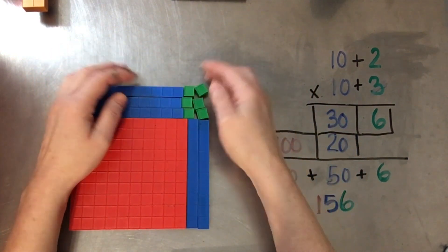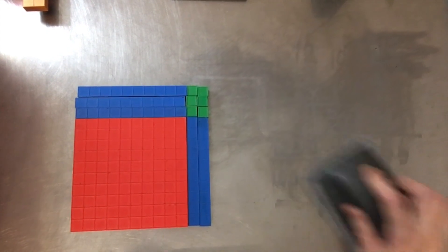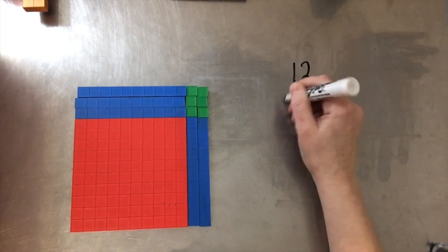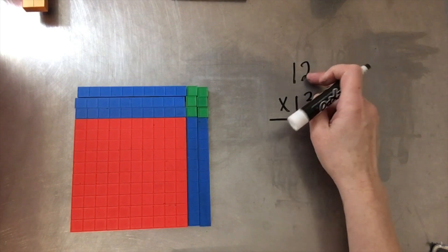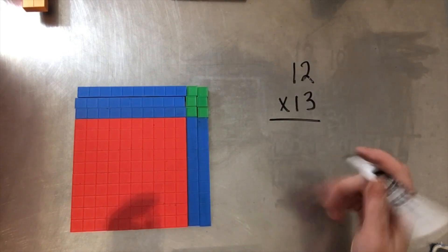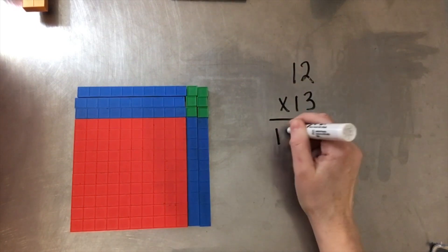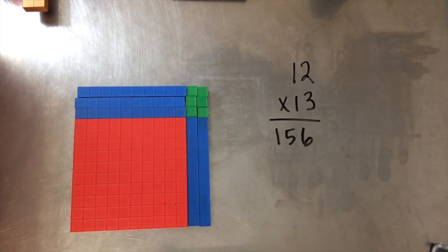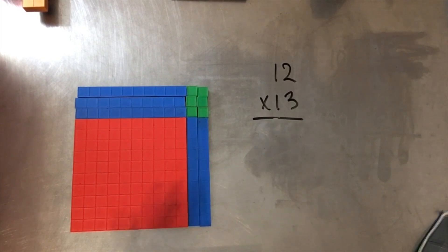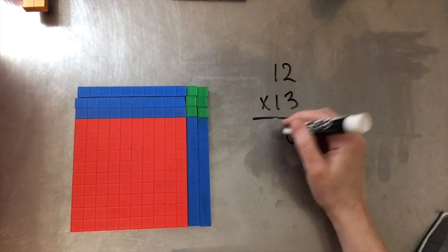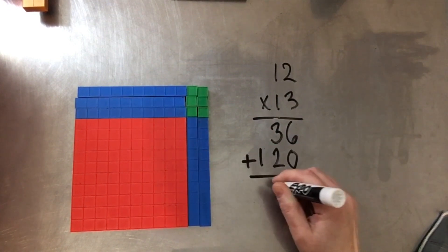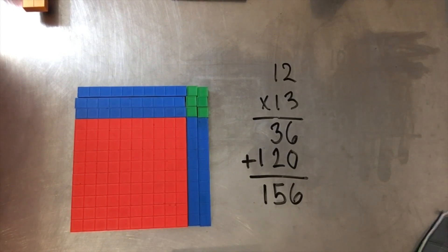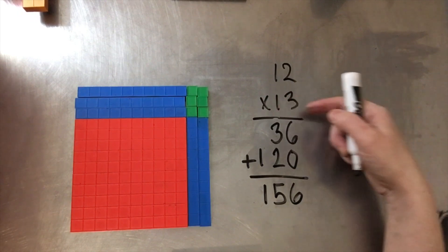A faster way to do this as you get better: 12 times 13 — 2 times 3 is 6, then 3 times 10 is 30, 10 times 2 is 20, so 30 plus 20 is 50 plus the 6 is 56, plus 10 times 10 is 100, giving 156. That's the aim — for kids to be able to do that in their heads. Compare that to the standard algorithm: three times two is six, three times one is three, put down your zero, one times two is two, one times one is one, add those together — 156. But nowhere in that process did they explain that those are really 2 times 10, or 3 times 10, or 10 times 10.